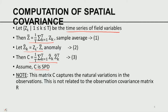What does C capture? That is the fundamental idea of both Kolmogorov and Wiener, who proposed this in the early 1940s. The matrix C captures the natural variation in the observation — the natural spatial variations. Please remember, this is not related to the observation error covariance R. In this case, R is 0 because we have assumed the observations are perfect. C essentially captures the natural spatial variability of the field variable of interest in the geographical region covered by the m observation stations.